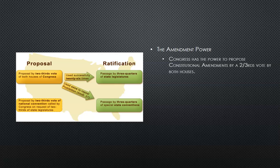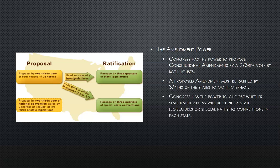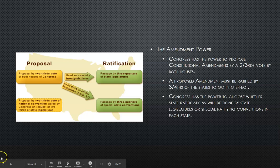The amendment power. Congress has the power to propose constitutional amendments by a two-thirds vote of both houses. A proposed amendment must be ratified by three-quarters of the states in order to go into effect. Congress has the power to choose whether state ratifications will be done by state legislatures or special ratifying conventions in each state. And this is the end of our lecture on congressional powers.